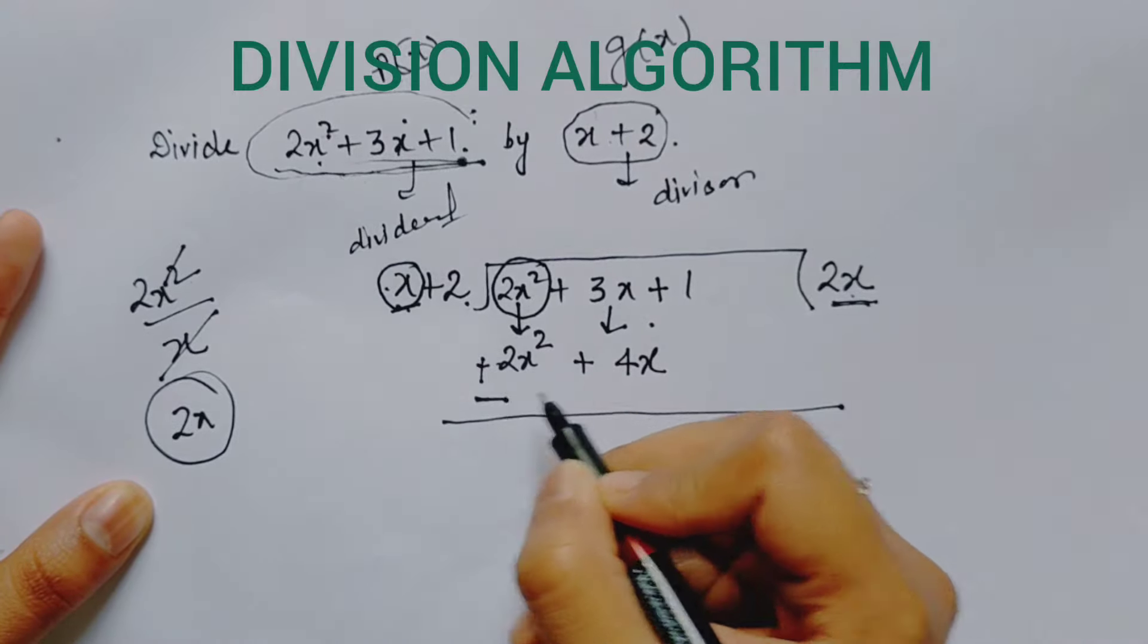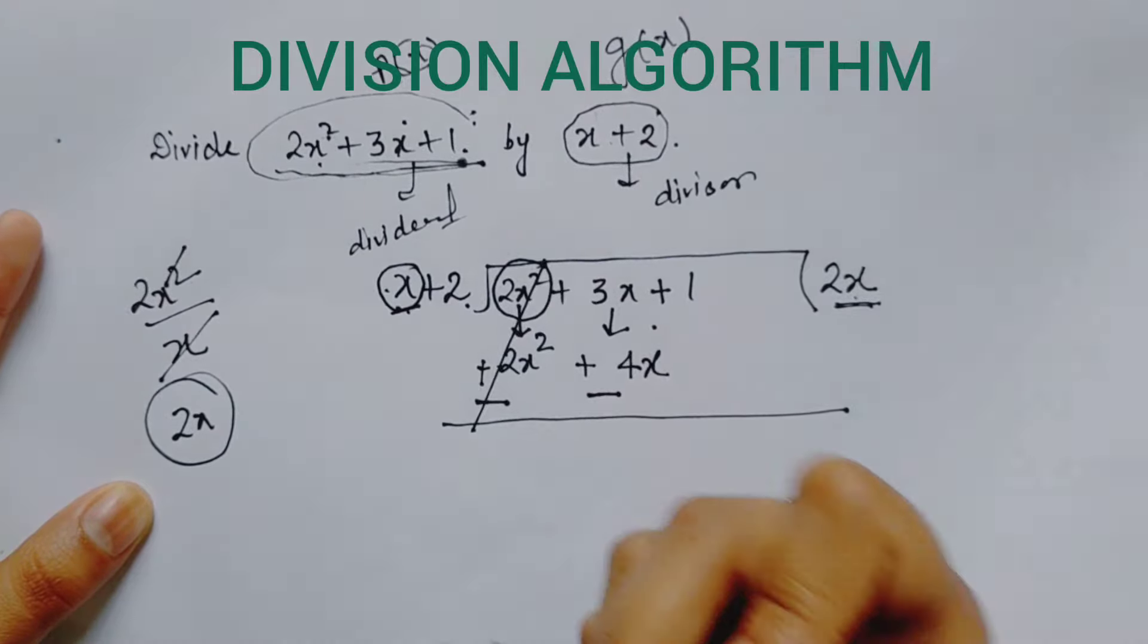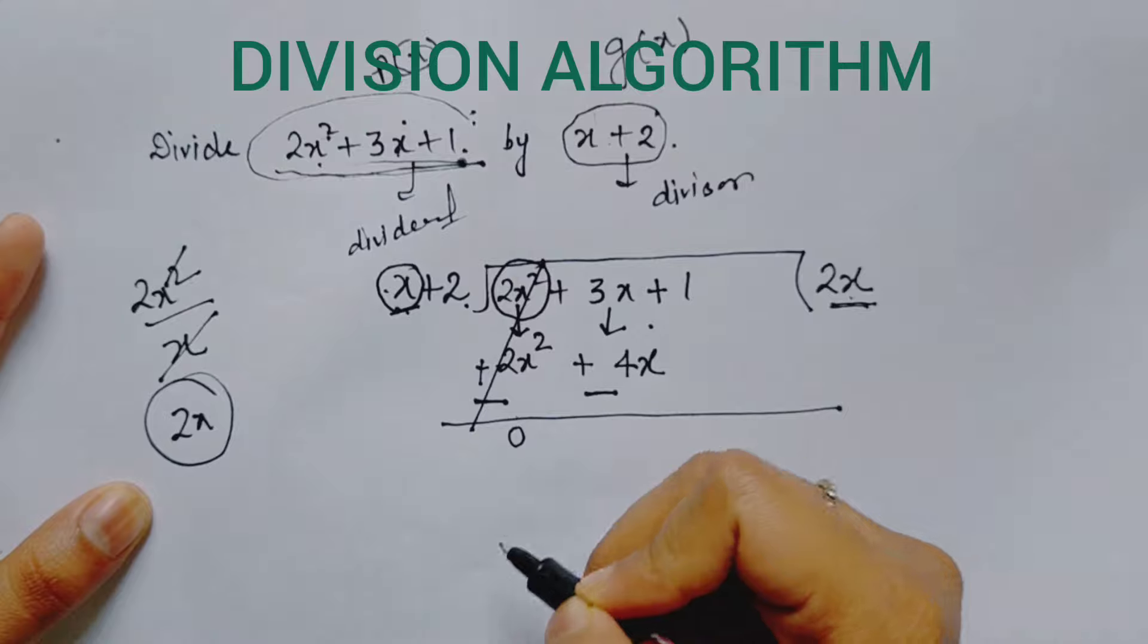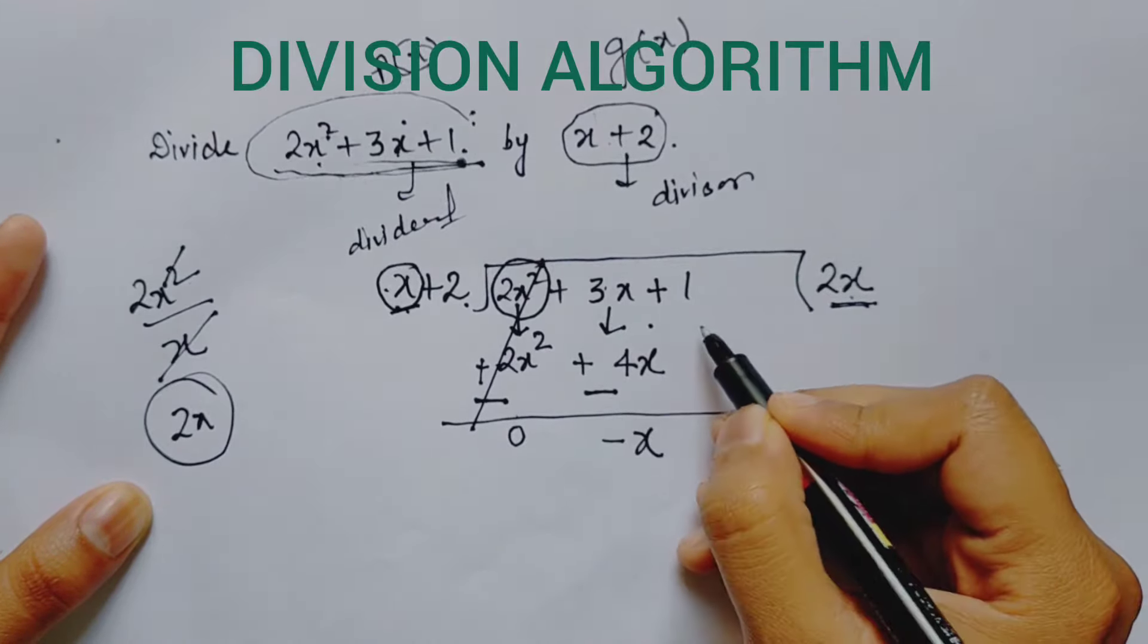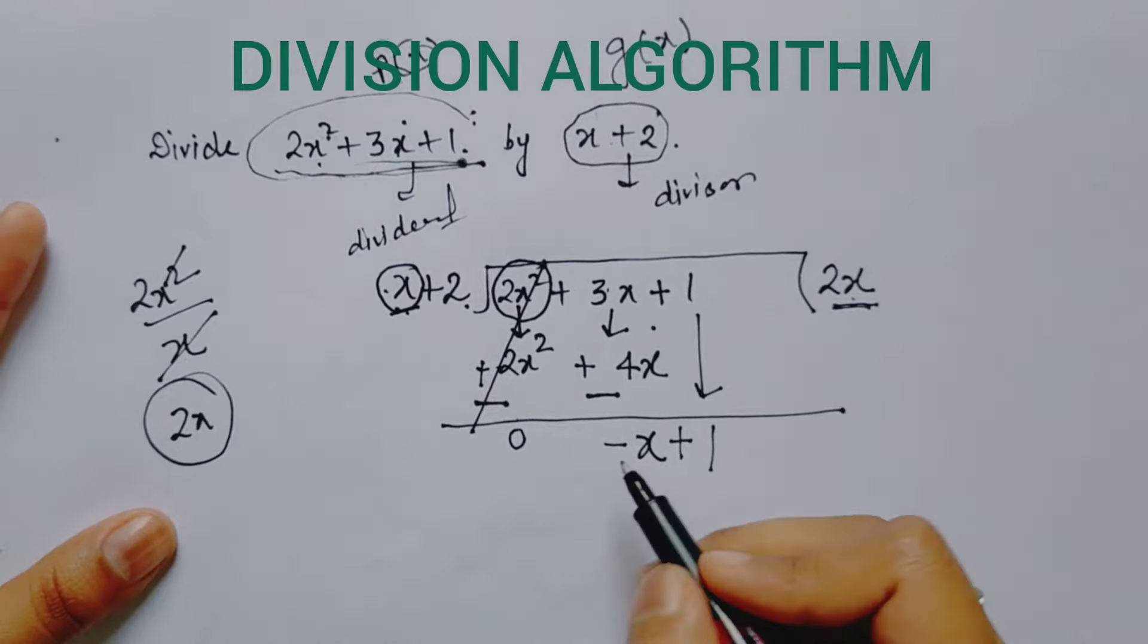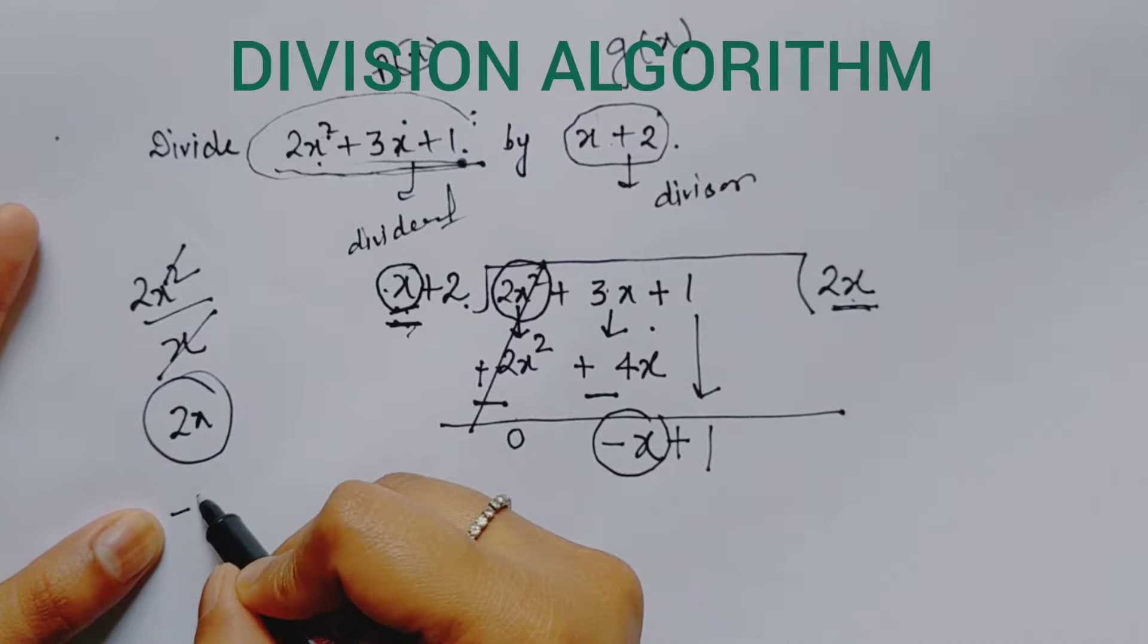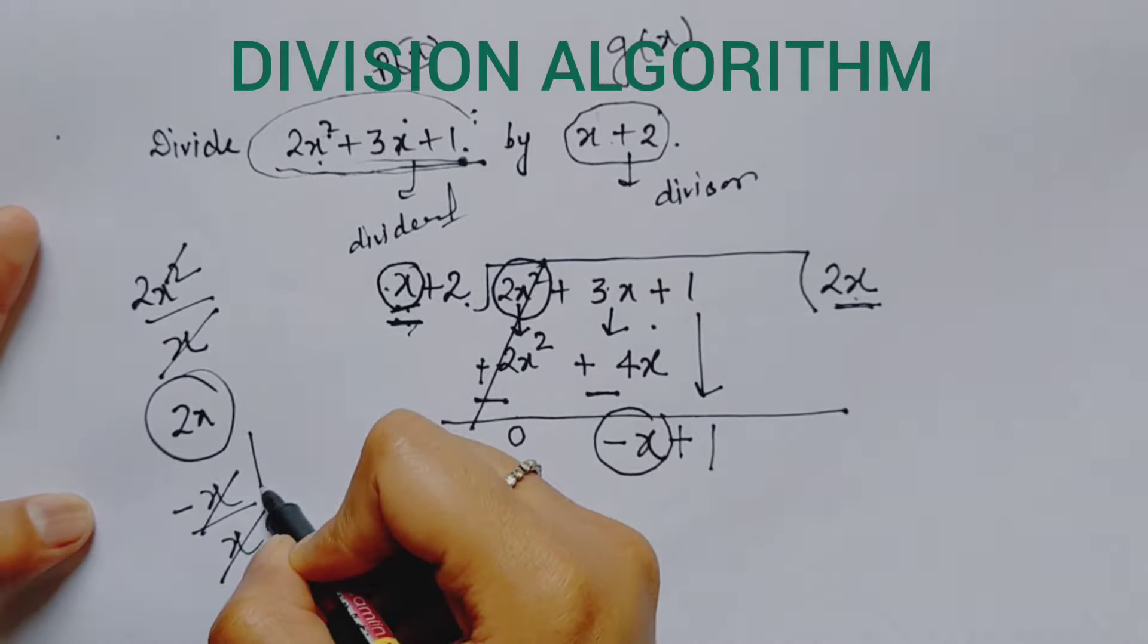Now we always put a line, and after the line we always change their sign. Here it was plus originally, so it will become minus. These two terms will be cancelled: 2x squared minus 2x squared gives 0. Now 3 minus 4 gives minus x, and 1 is noted as it is, plus 1.